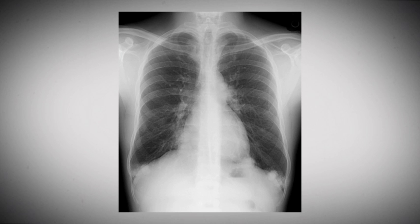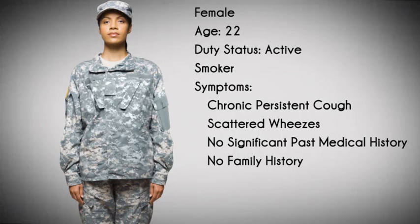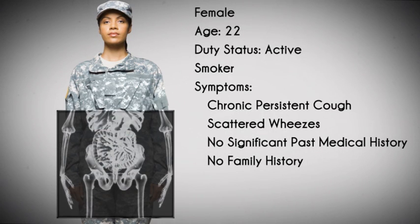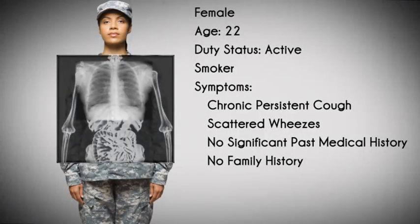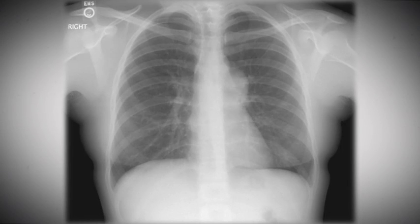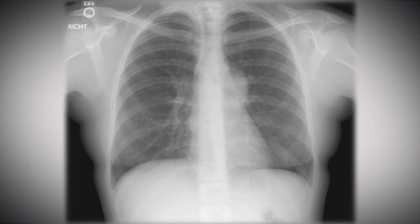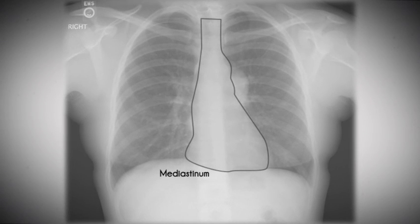The first case example is a 22-year-old active duty woman smoker with chronic persistent cough and scattered wheezes, with no other significant past medical or family history. On the frontal chest radiograph, there is a bulge coming off the left mediastinum in the area where the concavity of the aorticopulmonary window is expected. A little bit of the aortic knob and the normal left ventricle and right atrial contours can be seen; however, the pulmonary outflow tract cannot be seen. Therefore, the bulge coming off the left mediastinum needs to be explained. There is a positive silhouette sign involving the left mediastinum in the area of the aorticopulmonary window.